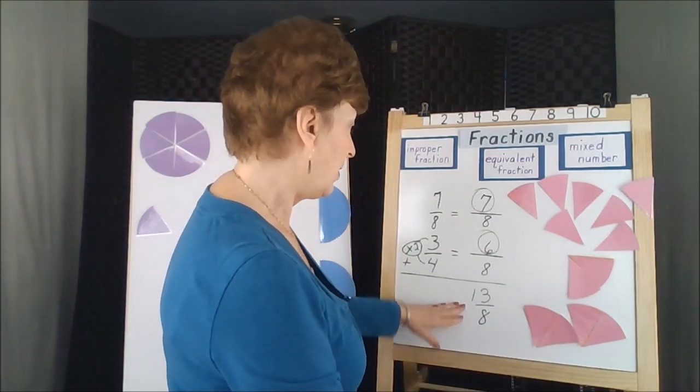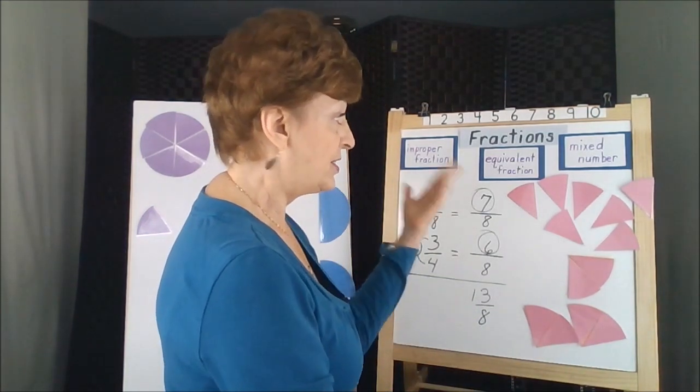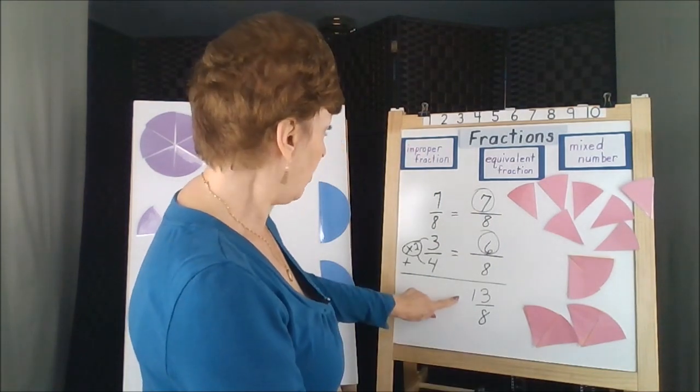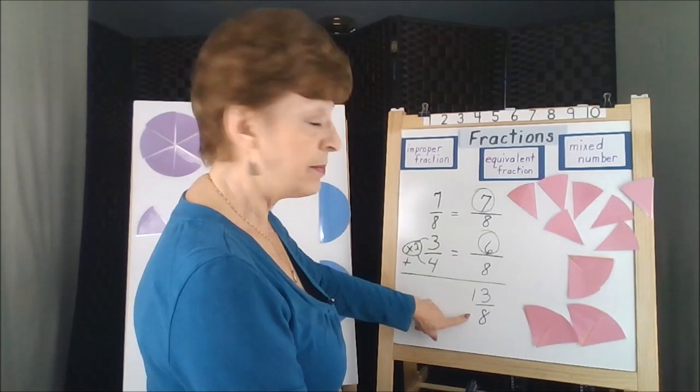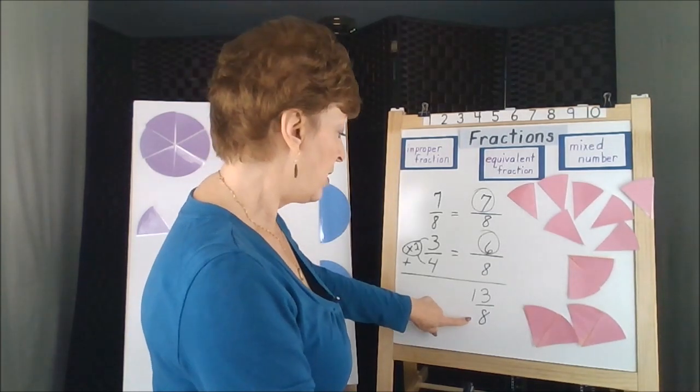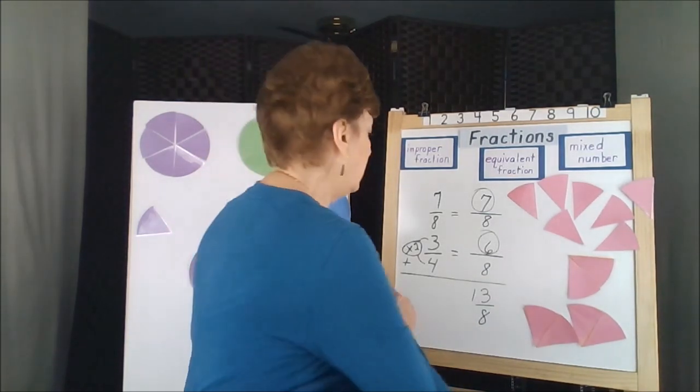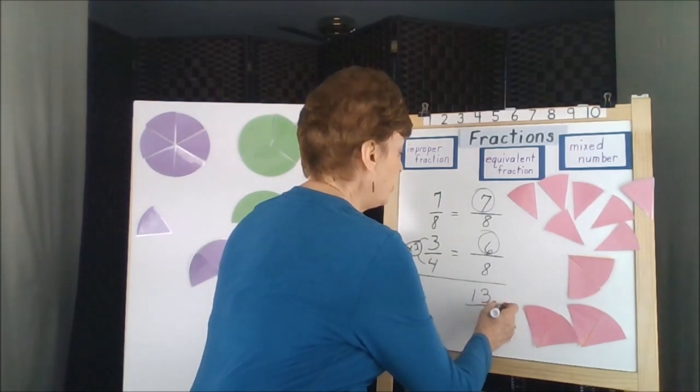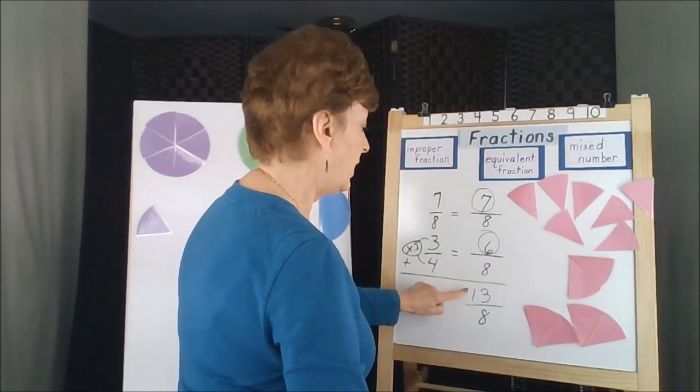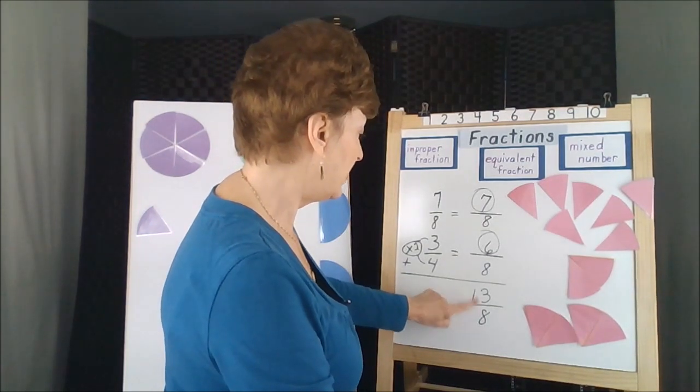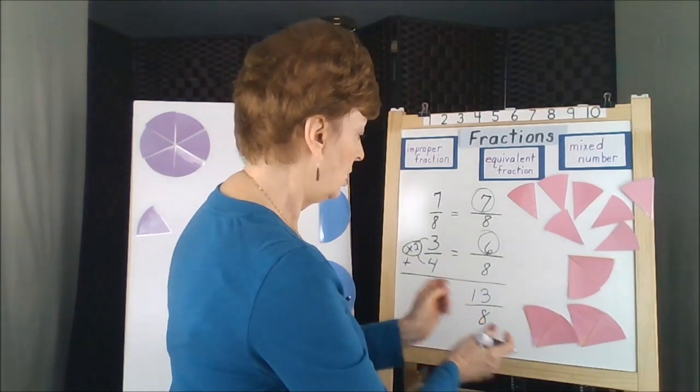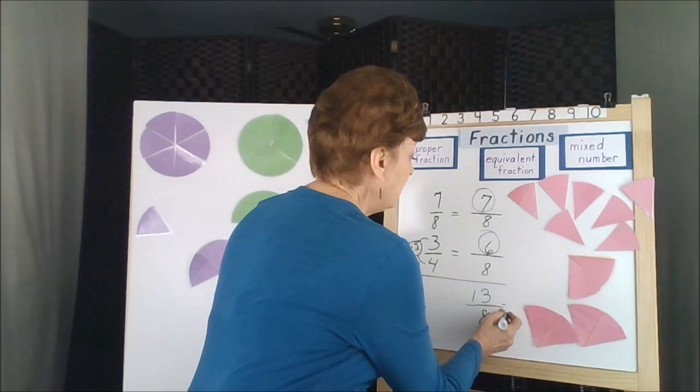Now I say, okay, but I don't understand what that means. I know I have an improper fraction. The numerator is larger than my denominator. So I know that I can divide my eight into the 13 because this is a top-heavy fraction. I have more pieces than a whole circle.